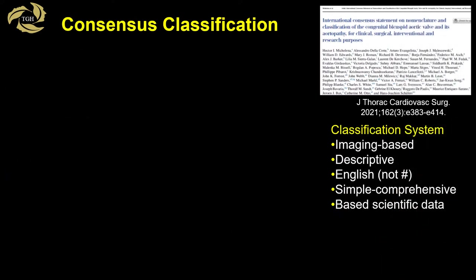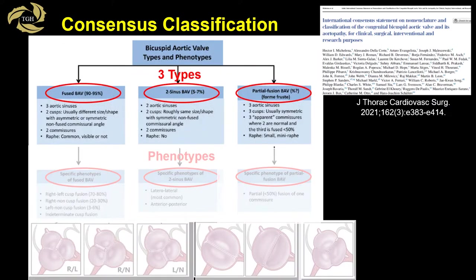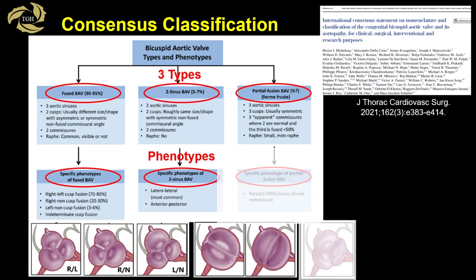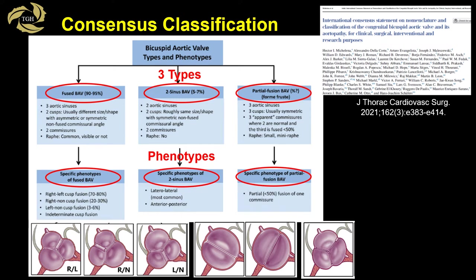This brings us to the recent consensus classification published in 2021. This is an imaging-based, descriptive, comprehensive nomenclature and classification system that uses the English language and not numbers or letters. It is based on anatomical, clinical, surgical, and pathological scientific data. There are three types: fused, two sinus, and forme fruste. Within each type, there are further phenotypes, which we will explore in the next few slides.